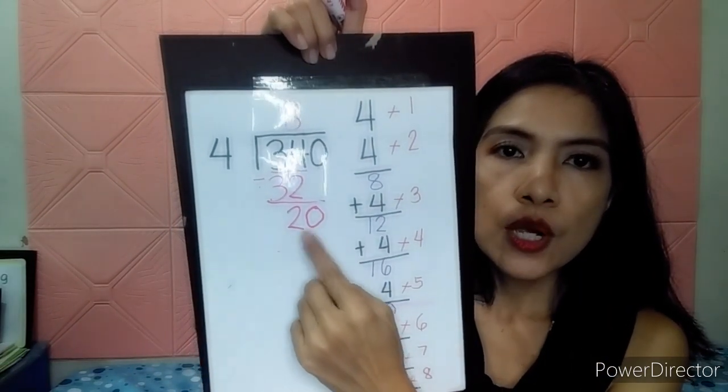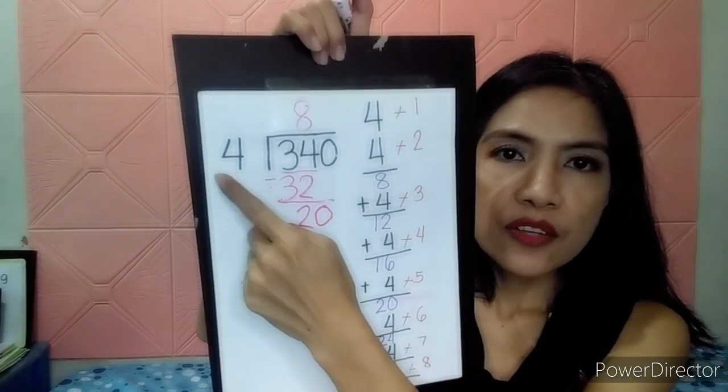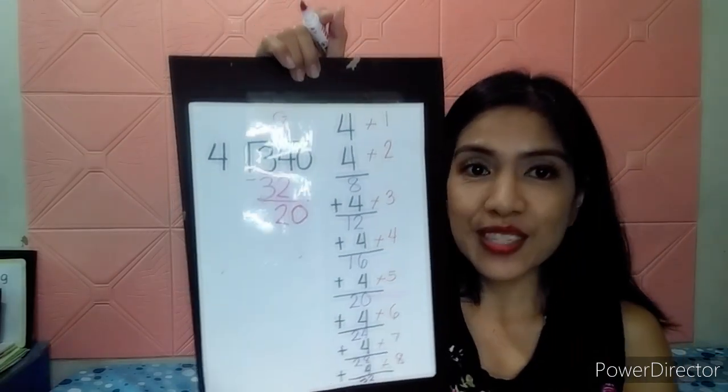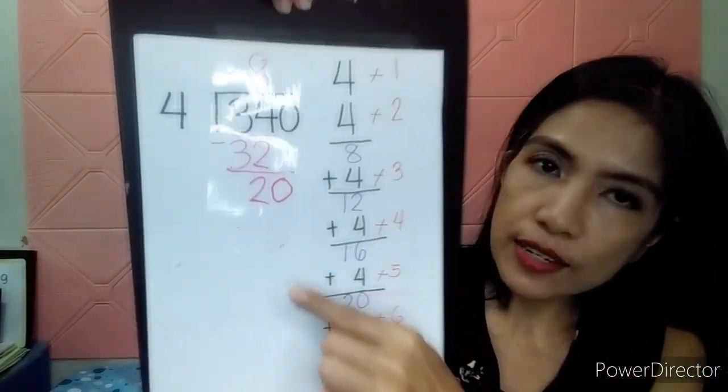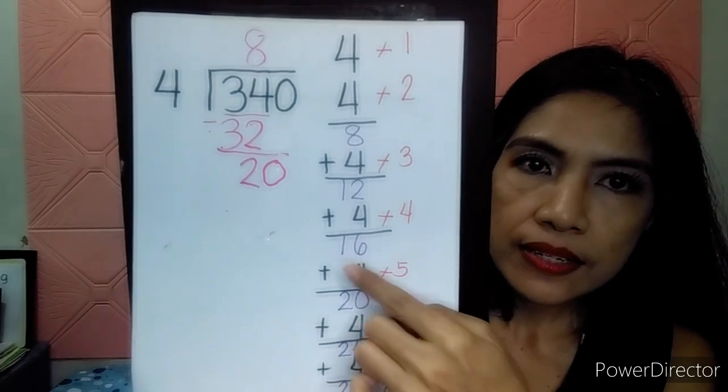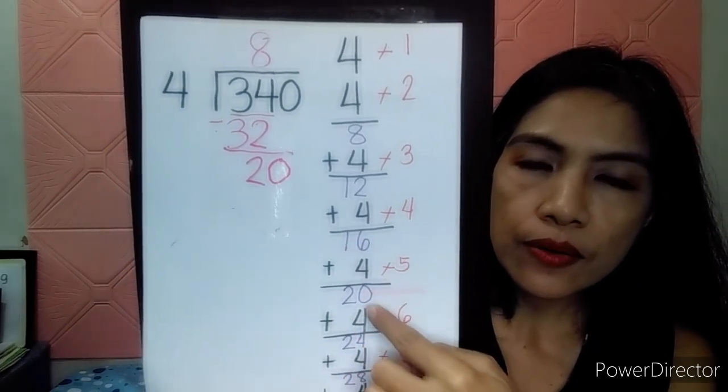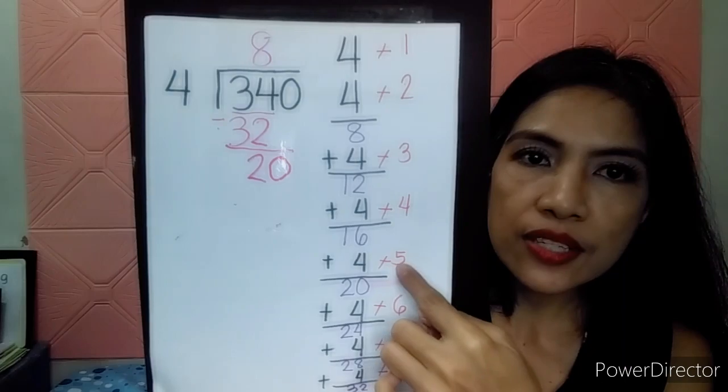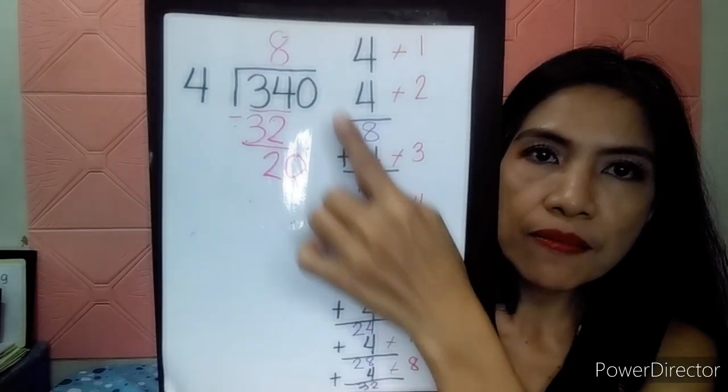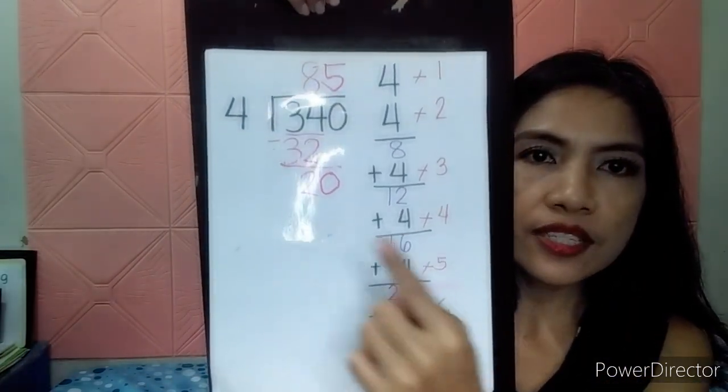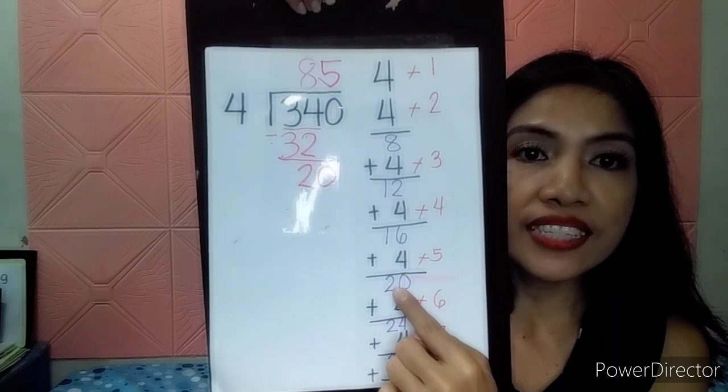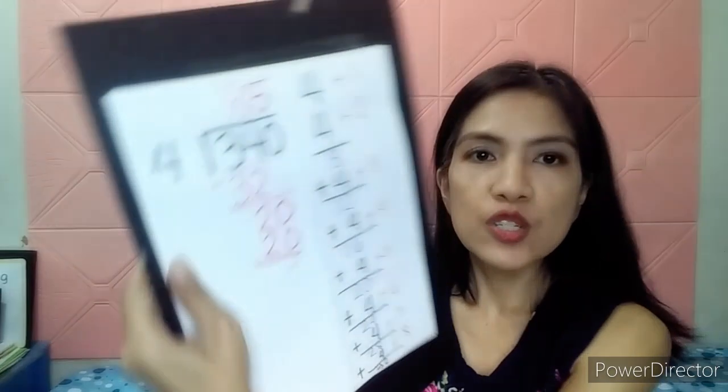There. So, I wrote now 0. So, 20. Divide by 4. Yes. We can divide it now. So, where's 20 near? Let's see. Is it here or here? Oh, there is 20. So, 20 is here. It's 5. Let's write 5 here. There. I already wrote 5. 5 times 4. Let's see. 5 times 4 equals 20. There's 20. So, 20 minus 20 is 0.